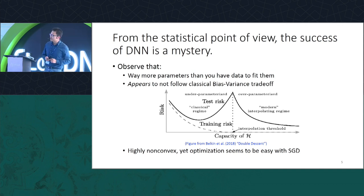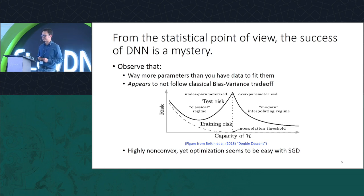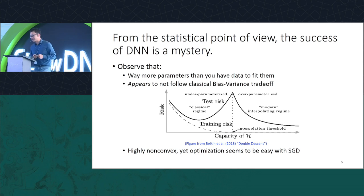From a statistical point of view, the success of deep neural networks is a bit of a mystery. We've already seen from several previous talks about the double descent curve — in some sense we're fitting more parameters than we have data in the classical statistical regime. It doesn't really follow the classical bias-variance trade-off, so we need a new way of measuring the complexity.